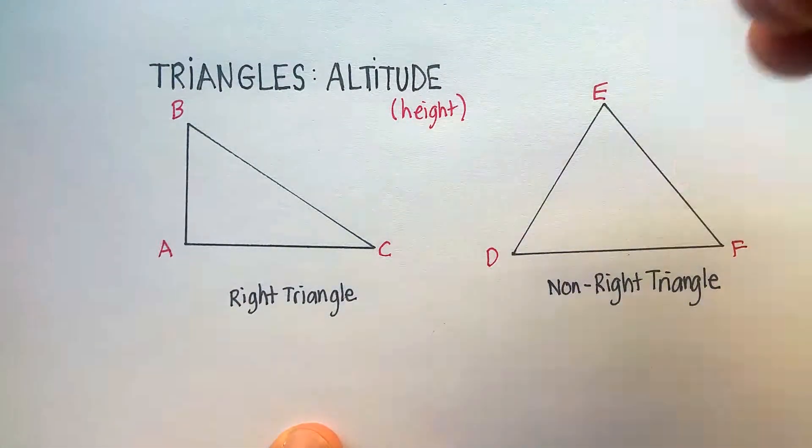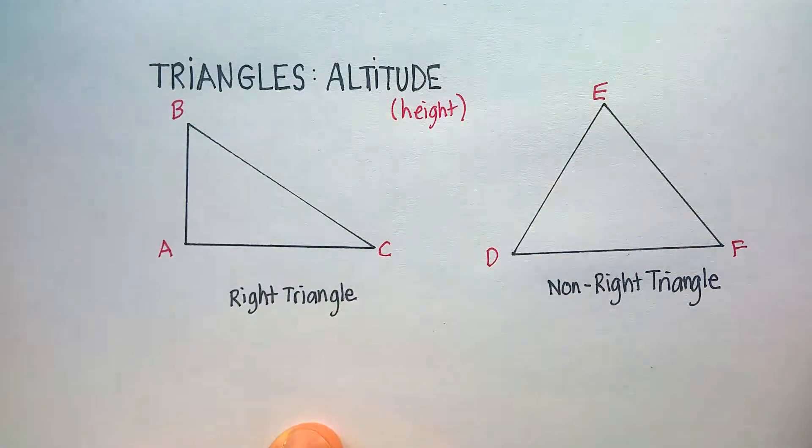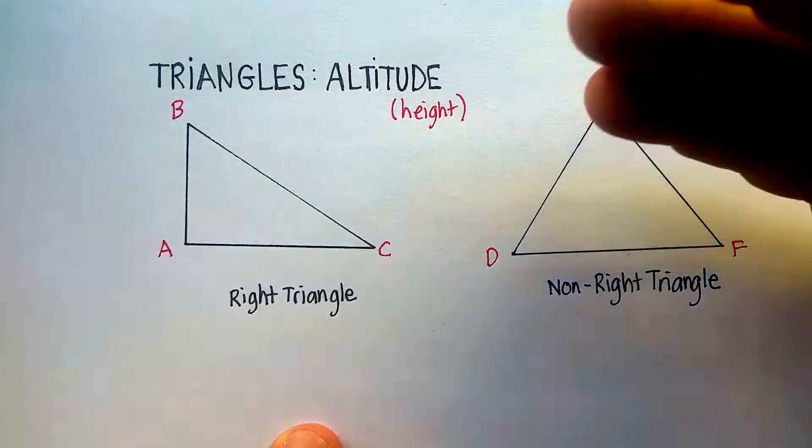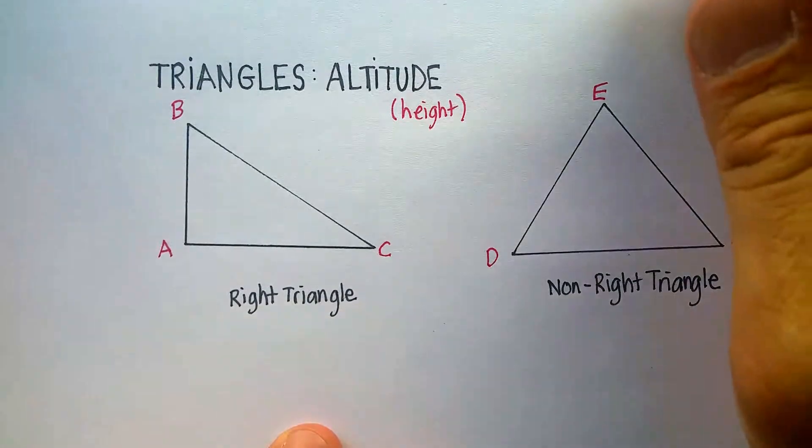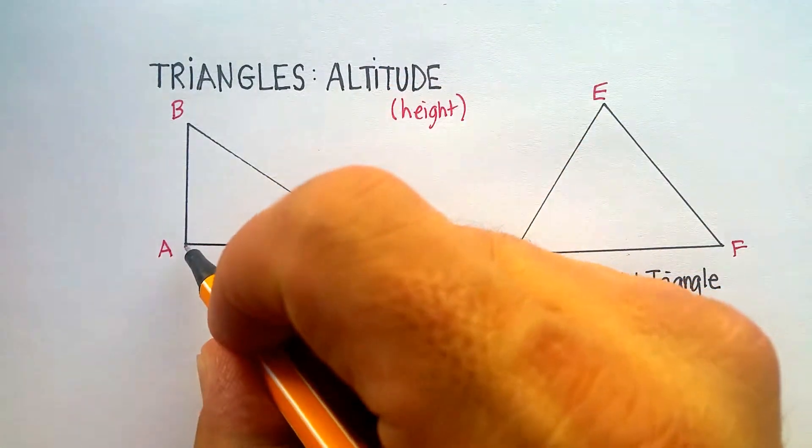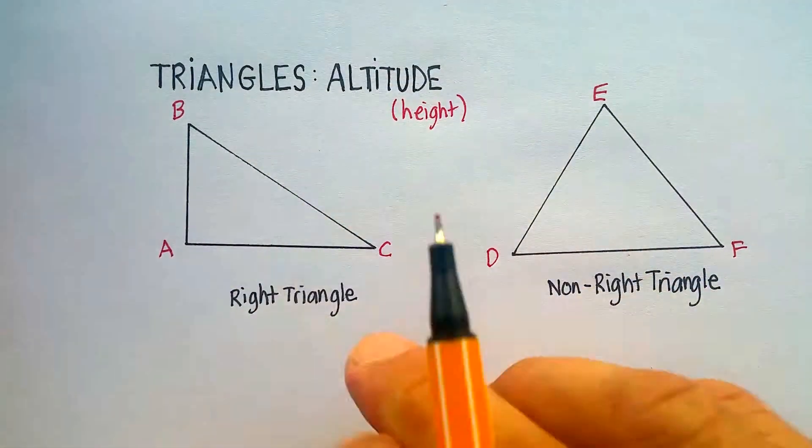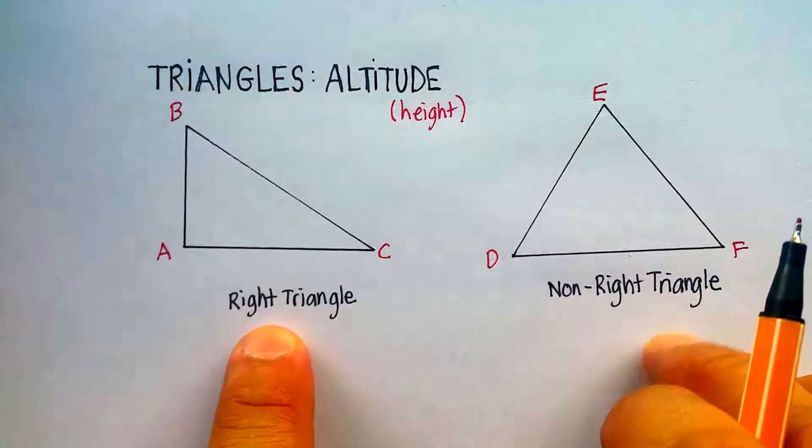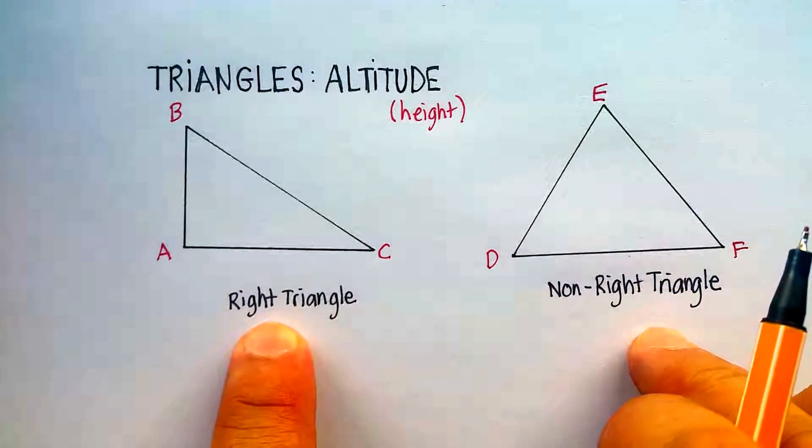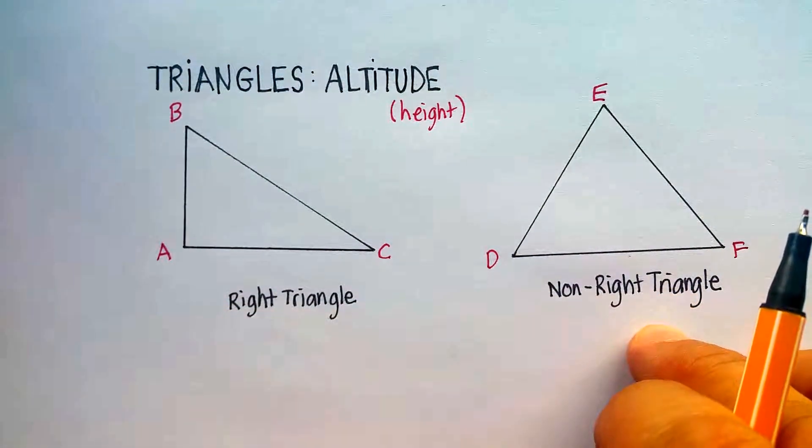To draw an altitude, which is different from a median, which is different from a bisector, which is different from a perpendicular bisector, you go to one of the vertices. I'm going to do two different cases, right triangles and non-right triangles. So let's start with the right triangle.